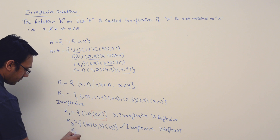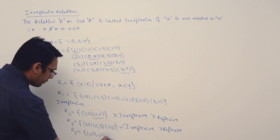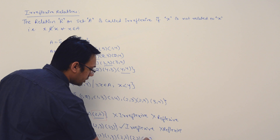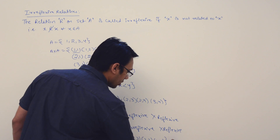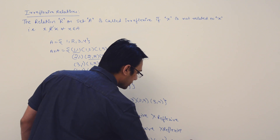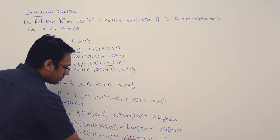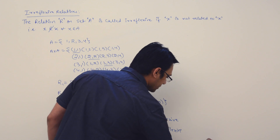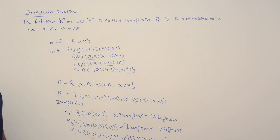We can have relation R5 = {(1,1), (1,2), (1,3), (2,2), (2,3), (3,3), (4,4)}. This relation is not irreflexive because it contains pairs (1,1), (2,2), (3,3), and (4,4). This relation is reflexive because it contains all the required ordered pairs (1,1), (2,2), (3,3), and (4,4).